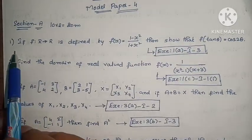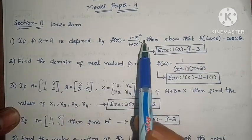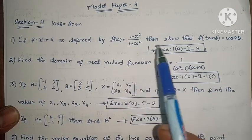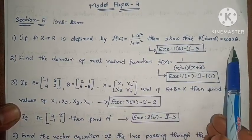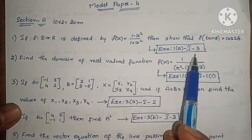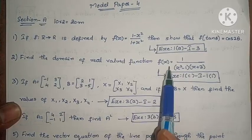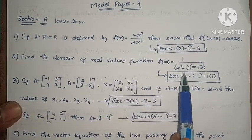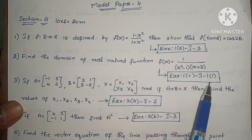The first equation: if f maps R to R is defined by f(x) equals (1 minus x squared) by (1 plus x squared), then show that f(tan theta) equals cos 2 theta. This is Exercise 1, First Roman, Third one. Next, find the domain of real valued function f(x) equals 1 by (x squared minus 1) into (x plus 3). Exercise 1, First Roman, First one.